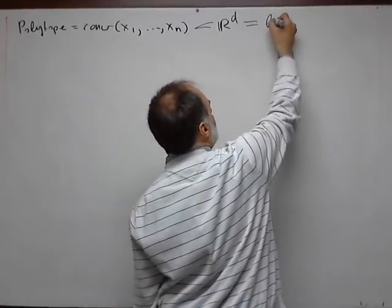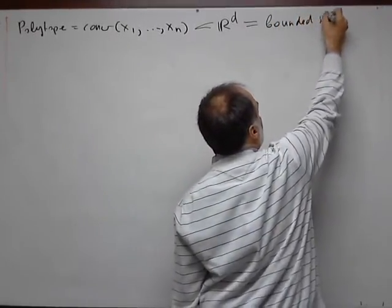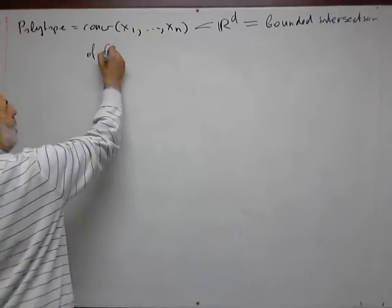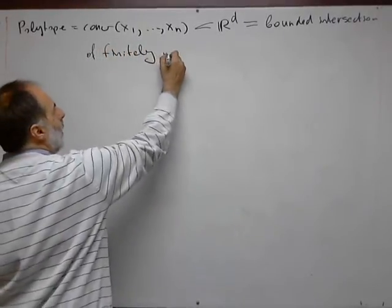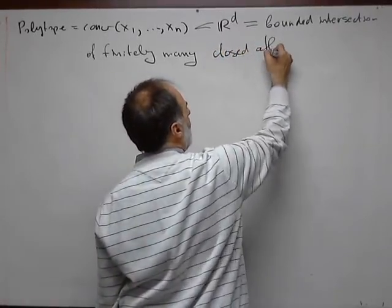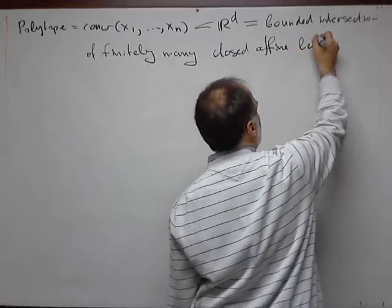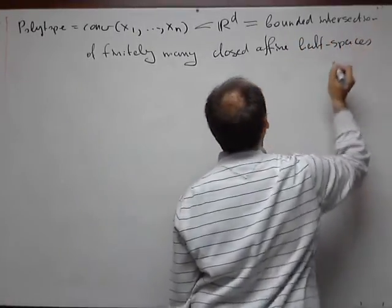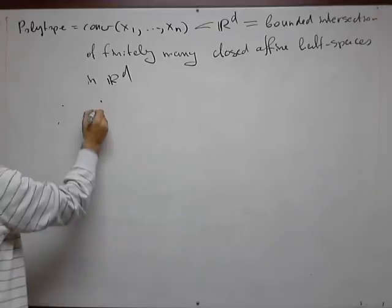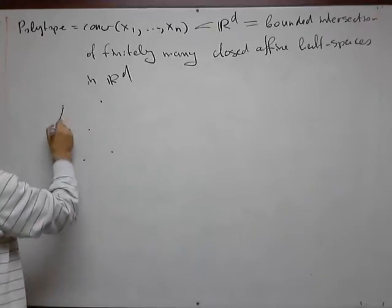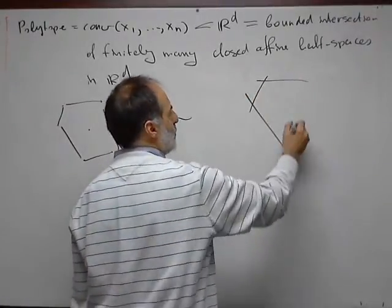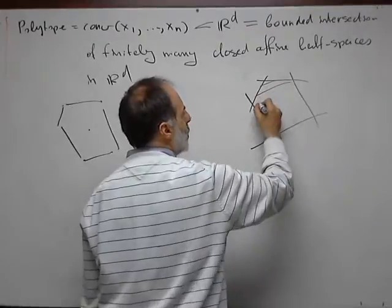This is the same as bounded intersection of finitely many closed affine half-spaces in R to the power d. So either you take the convex hull of finitely many points, or you take bounded intersections of finitely many closed affine half-spaces.